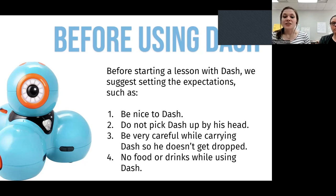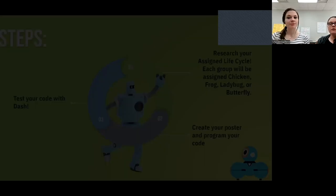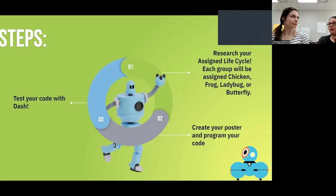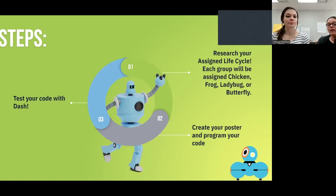It's also important students are careful carrying Dash so he doesn't get dropped, and as with any electronic device, you should not have food or drinks around him. We preloaded websites for students and gave them worksheets. Each group could pick whether to research a chicken, frog, ladybug, or butterfly life cycle. We let them take turns picking code to use for Dash, because Dash needed to go around their poster in the proper order of the life cycle, and then we let them test their code.